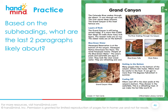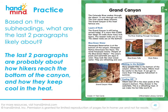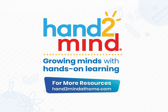Now let's look at subheadings. Based on the subheadings, what are the last two paragraphs of this text likely about? The second-to-last subheading is 'Getting to the Bottom' — we're talking about the Grand Canyon — so I assume that's about how people get to the bottom of the canyon. The last subheading is 'Cooling Off,' so I'll assume that's about how people stay cool while hiking. The last two paragraphs are probably about how hikers reach the bottom of the canyon and how they keep cool in the heat.